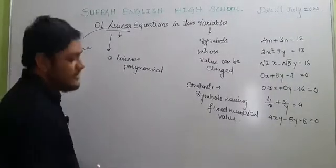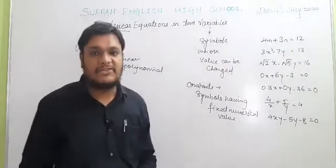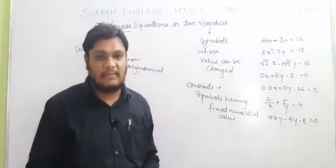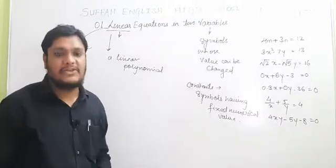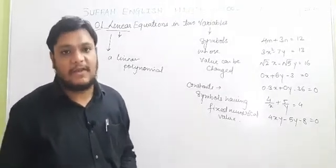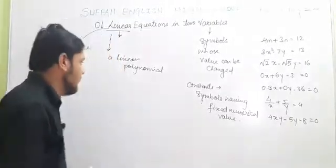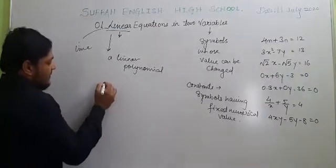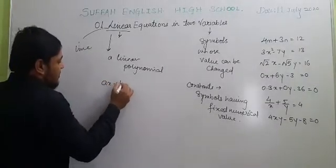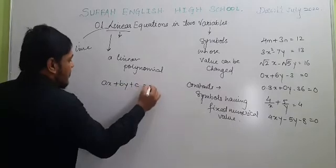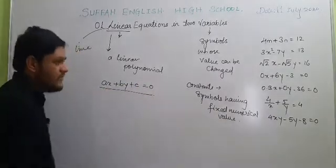So the complete definition of a linear equation is: an equation that contains 2 variables where the degree of each term containing a variable is 1. For example, a standard form of a linear equation is Ax + By + C = 0, which we studied in 9th standard.